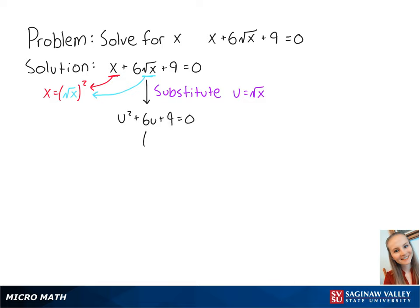This can factor out to become u plus 3 squared equals 0. So now we have u plus 3 equals 0. If we subtract 3 from both sides, we get u equals negative 3.